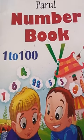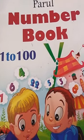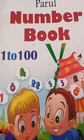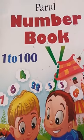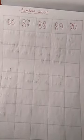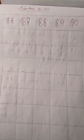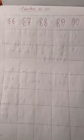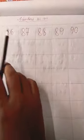First, we have to read the number. Then we will move to the writing. So, first read the number. You can see, I have written the numbers 86 to 90 in a row. We have to read the number first. So, let's start.